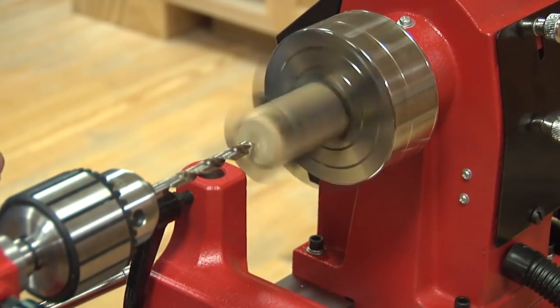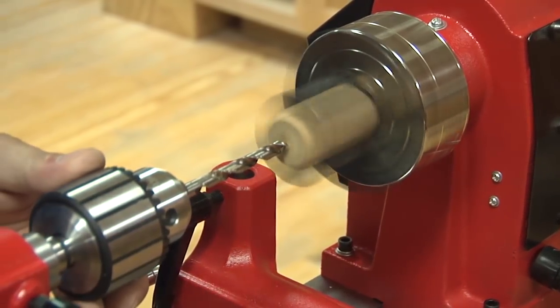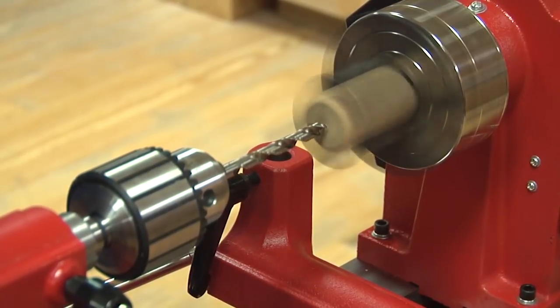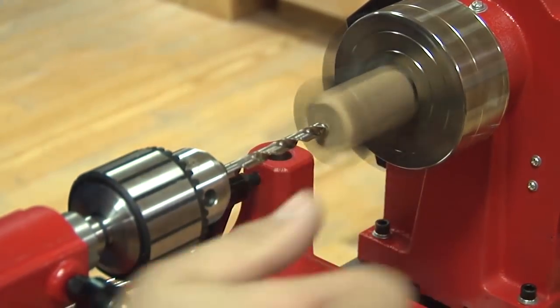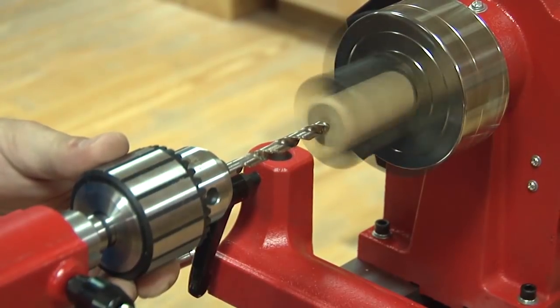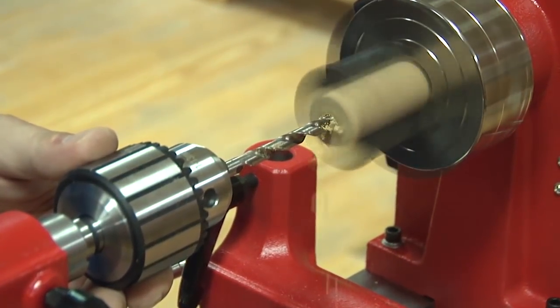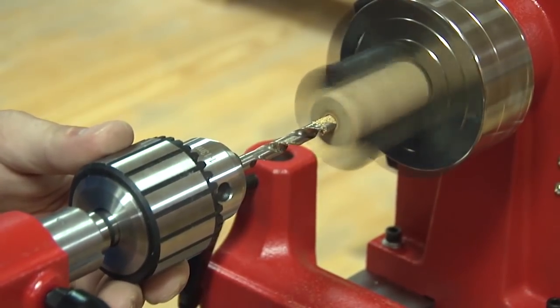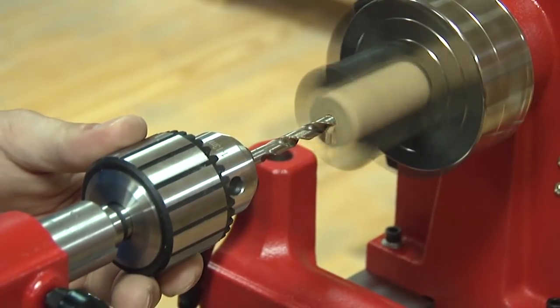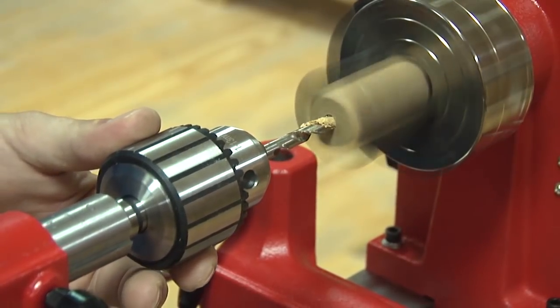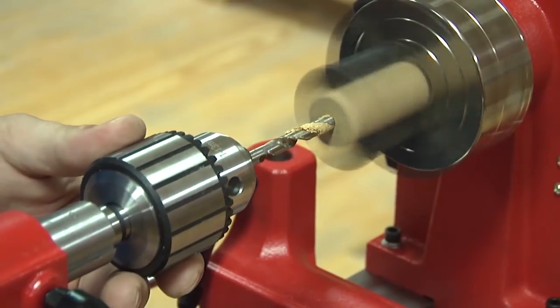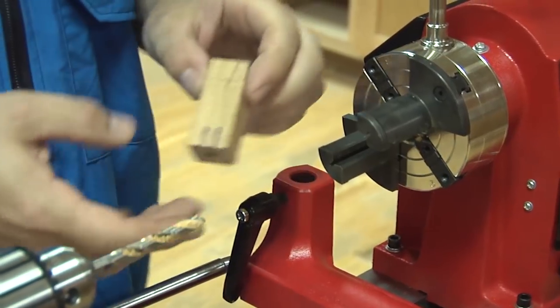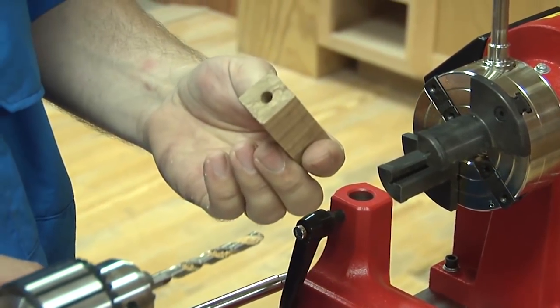Using the quill, drill the blank. And then that one's ready to glue the brass tube in.